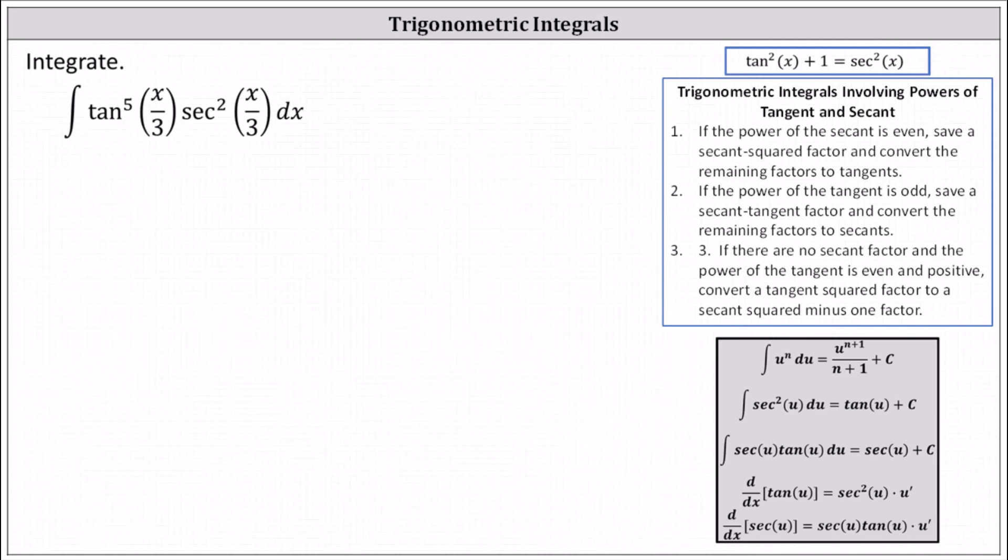So we'll let u equal tangent of x divided by 3. Recall that tangent of x divided by 3 is the same as tangent of one third x.